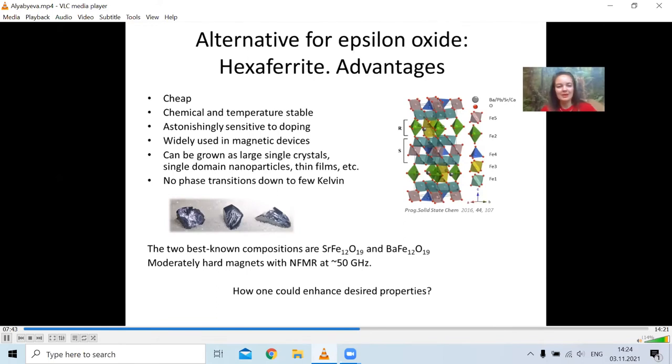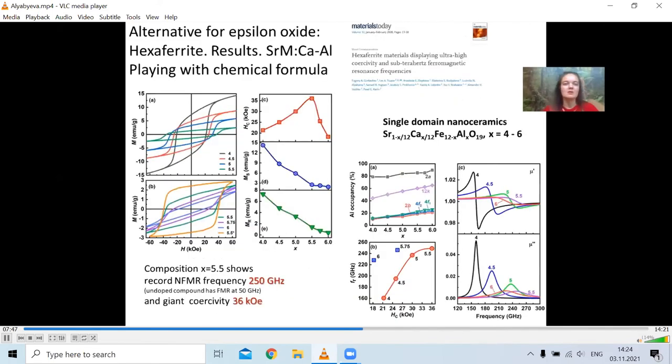How could we make these moderate hard magnets superior? So first, we try to vary these chemical formulas. Since they are very sensitive to doping, we will vary doping.